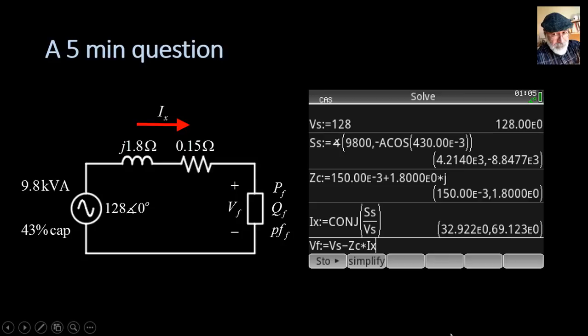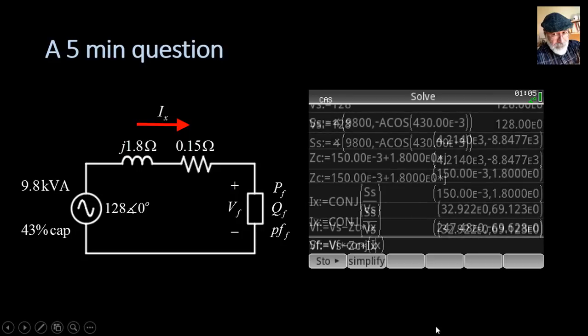The voltage at the factory is the voltage of the source minus the drop in the cable: Vs minus Zc multiplied by Ix. And the complex power at the load is the voltage at the load Vf multiplied by the complex conjugate of the current Ix. We're ready.